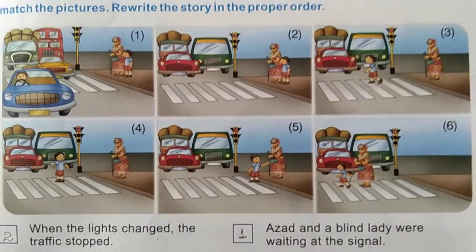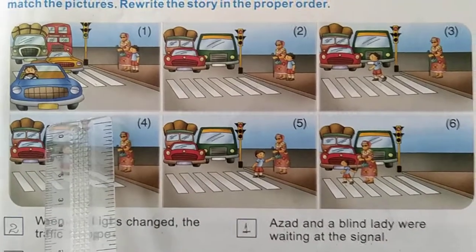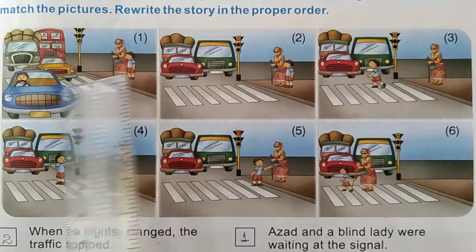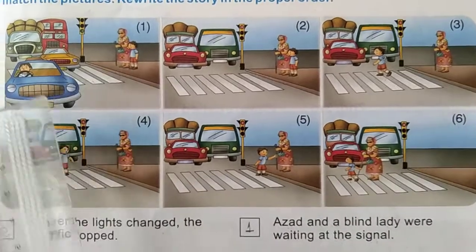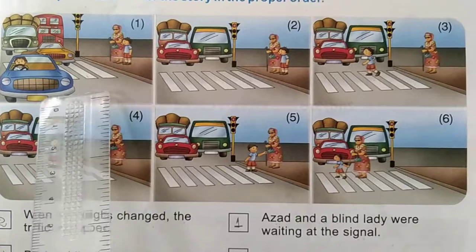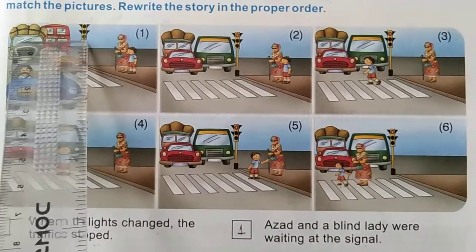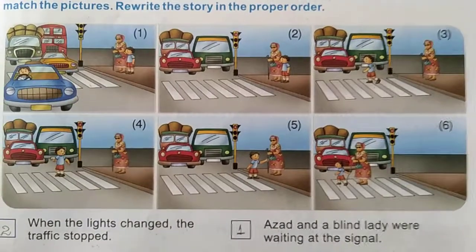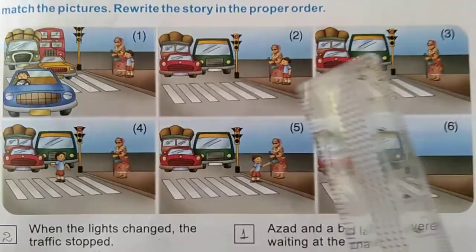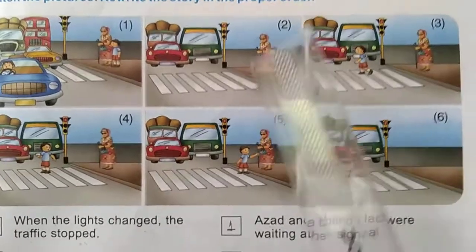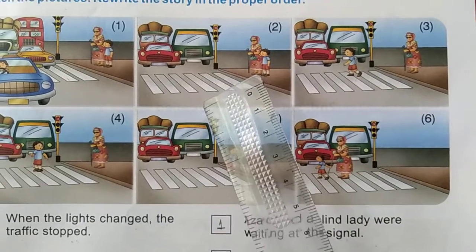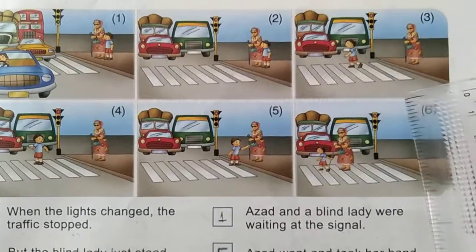Let us see this picture. In the first picture you can see — he is Azat and she is a blind lady. This is a traffic signal you can see here. And in the second picture, the lights changed and the traffic is stopped.